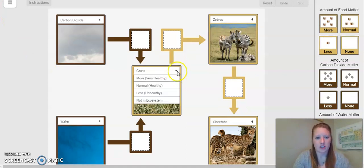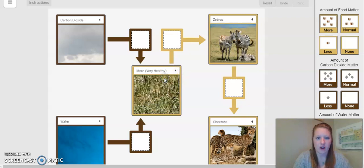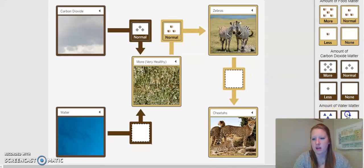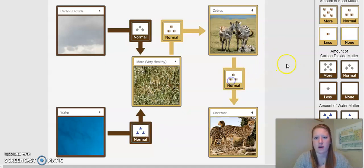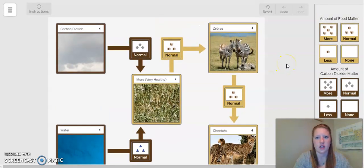So now let's take a look at our modeling tool and get started on our simulation. If you remember, I need to change the plants to very healthy because we want to see what happens when there are more plants. I'm going to do a normal amount of food matter, a normal amount of carbon dioxide, and a normal amount of water, and a normal amount of food matter for zebras. Let's see what happens.